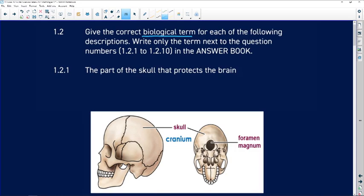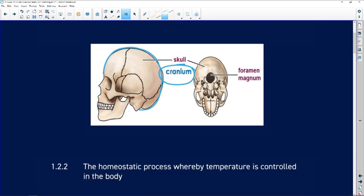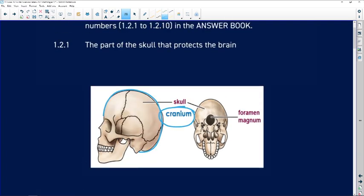The part of the cell that protects the brain. We're looking at the part that we commonly call the skull, but more correctly in Life Sciences, this is called the cranium. Also, you're not going to have the answer as being skull if it mentioned the word skull in the question. So you need to be looking for a different word for skull, which is cranium.